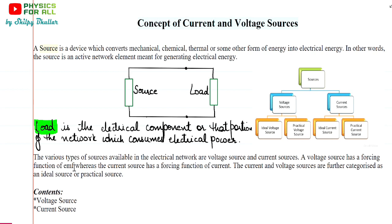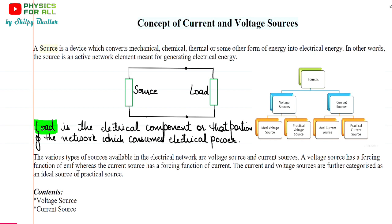Due to the difference in charge concentration at positive and negative terminals, a potential difference is set up which results in flow of current. In case of current source, the forcing function is that of current; current source will simply provide you the current. We further categorize them as ideal source or practical source. Ideal, as the name suggests, is where there are no losses and it works with 100% efficiency. Practical is what actually happens in real life, with losses, incomplete efficiency, and voltage drops.